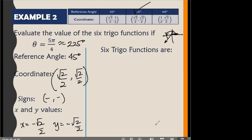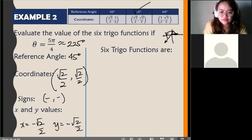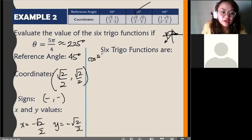Okay, let's move on to the six circular functions. Cosine of 5π/4 — your cosine is your x coordinate.